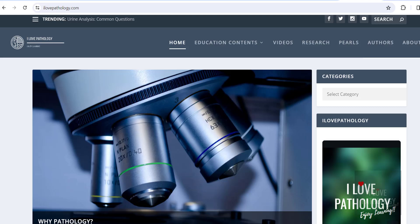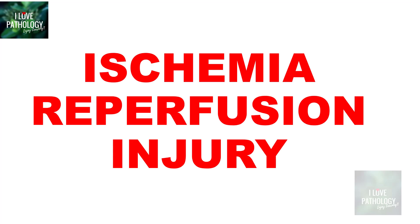Hi everyone. Welcome back to this short tutorial from Pathology Made Simple at ilowpathology.com. This is in continuation with the ischemic heart disease series. In the last few sessions, we were discussing about the important concepts of myocardial infarction. We talked about the etiopathogenesis and discussed in detail about the morphology of myocardial infarction. In this session, let us learn another important concept in the context of myocardial infarction: ischemia reperfusion injury.